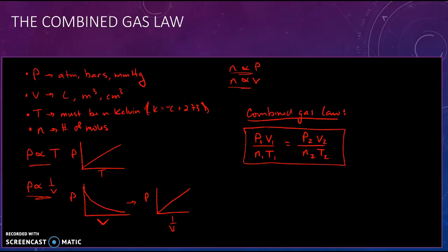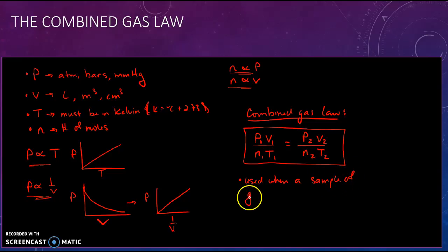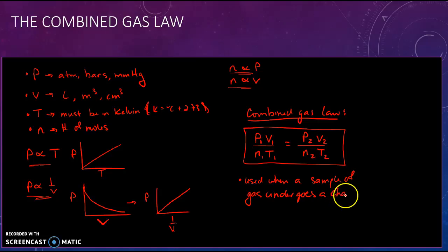The combined gas law is used when we have a sample of gas and we change one of its properties — pressure, volume, temperature, or number of moles. It's the same gas and we change something, and we want to know the new pressure, volume, temperature, or number of moles. A lot of times in these problems two out of the four variables will be constant, one changes, and we want to know how the other reacts.